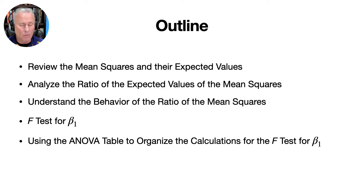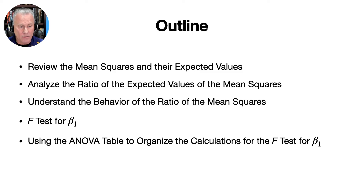Here's an outline of what we'll be looking at in this lecture. We'll first review the mean squares and their expected values. We'll then analyze the ratio of the expected values of the mean squares and use that to understand the behavior of the ratio of the mean squares. We'll then use that to develop an F-test for the slope coefficient beta1. And finally, we'll use the ANOVA table to organize the calculations for the F-test involving beta1.